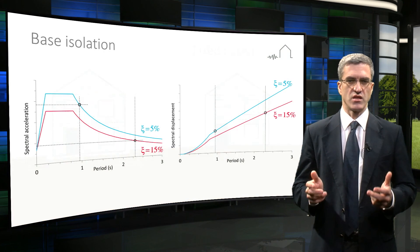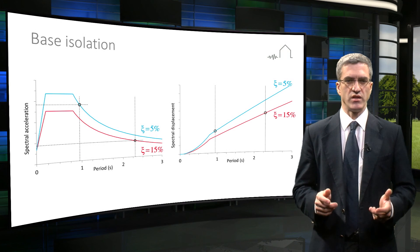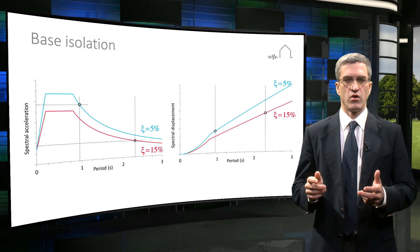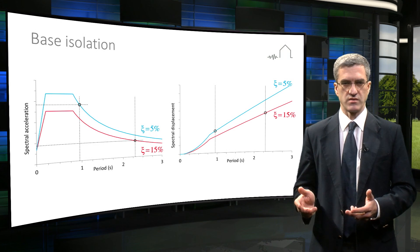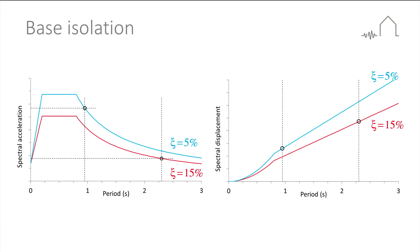A base isolation system places the building on a horizontally flexible base. This means that the effective natural period of the system becomes longer. You will see that the accelerations and therefore forces are much lower at these longer periods. Base isolators also typically have higher levels of damping to reduce isolator displacements.